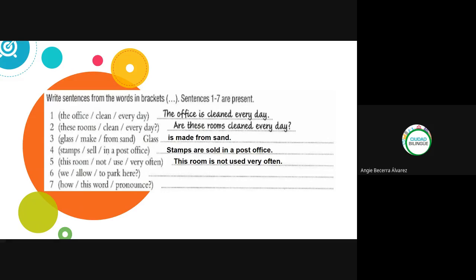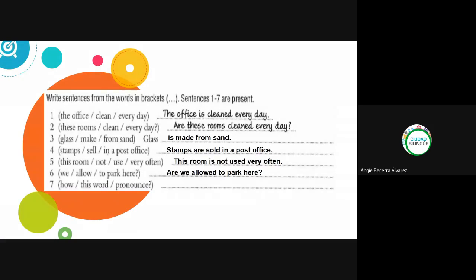Number six: 'We allow to park here?' — it has a question mark, so it's a question. The past participle of 'allow' is 'allowed' (regular verb, ends in -ed). As a question: 'Are we allowed to park here?' Very good.